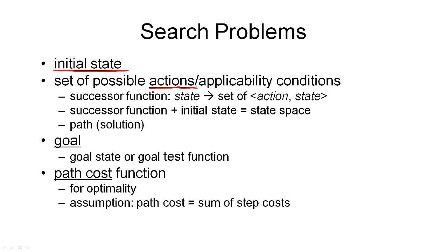Next, we need a set of possible actions. Not every action will be applicable in every state, so we'll also need to define the applicability conditions for actions in states. We can define the actions through a successor function. A successor function maps a state into a set of pairs of actions and state. So for each state of the world, the successor function maps it to all those actions that are applicable together with the states that result from the action being applied in the original state and leading us to this new state.